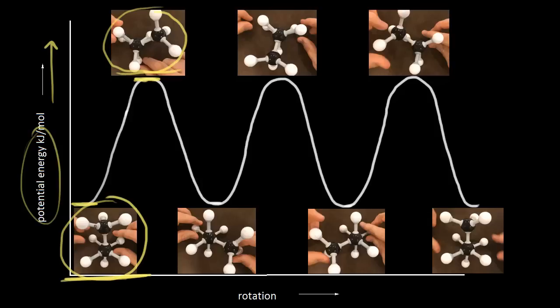It takes energy to go from the staggered conformation to the eclipsed conformation. The analogy I used in the earlier video was a boulder: if you have a boulder at the bottom of a hill and you're trying to push it up to the top, it takes energy to do that. At the top of the hill the boulder is less stable — higher potential energy means less stable, lower potential energy means more stable. So our staggered conformation is more stable than our eclipsed.